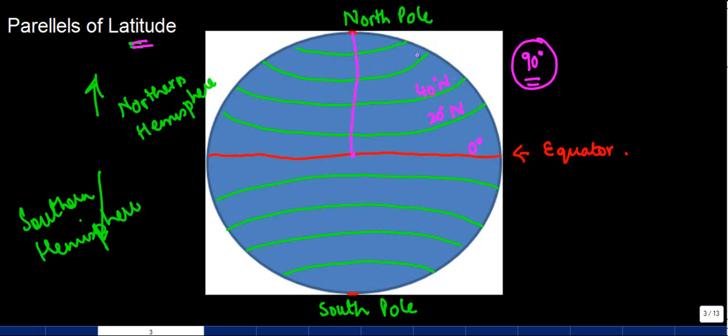Similarly, you have 60 degrees, you have 80 degrees, and the pole is basically 90 degrees North.